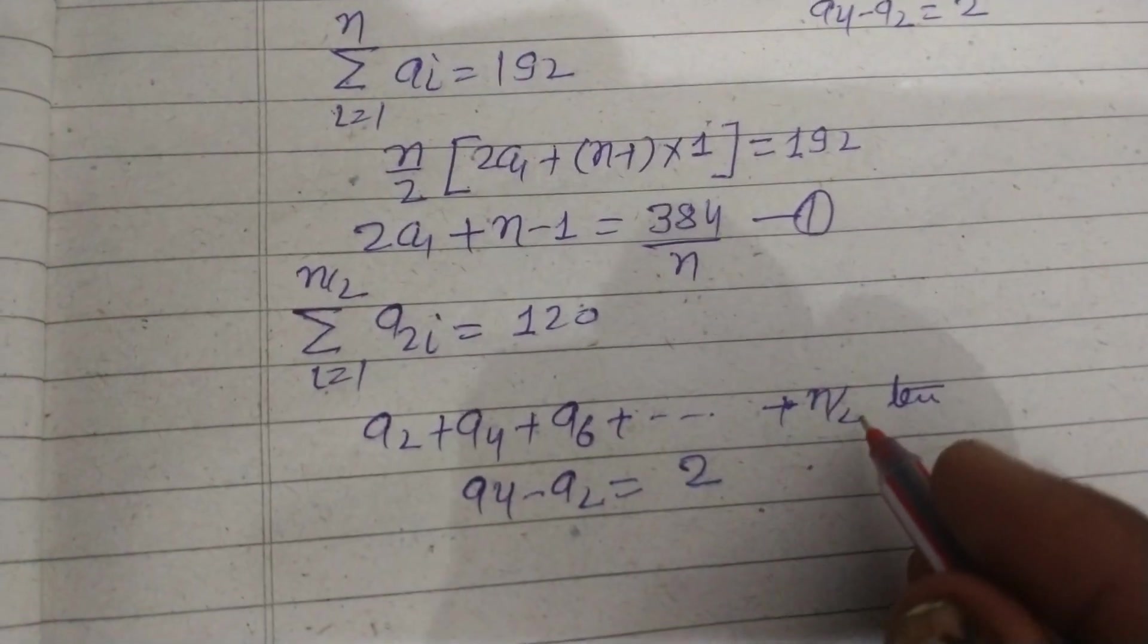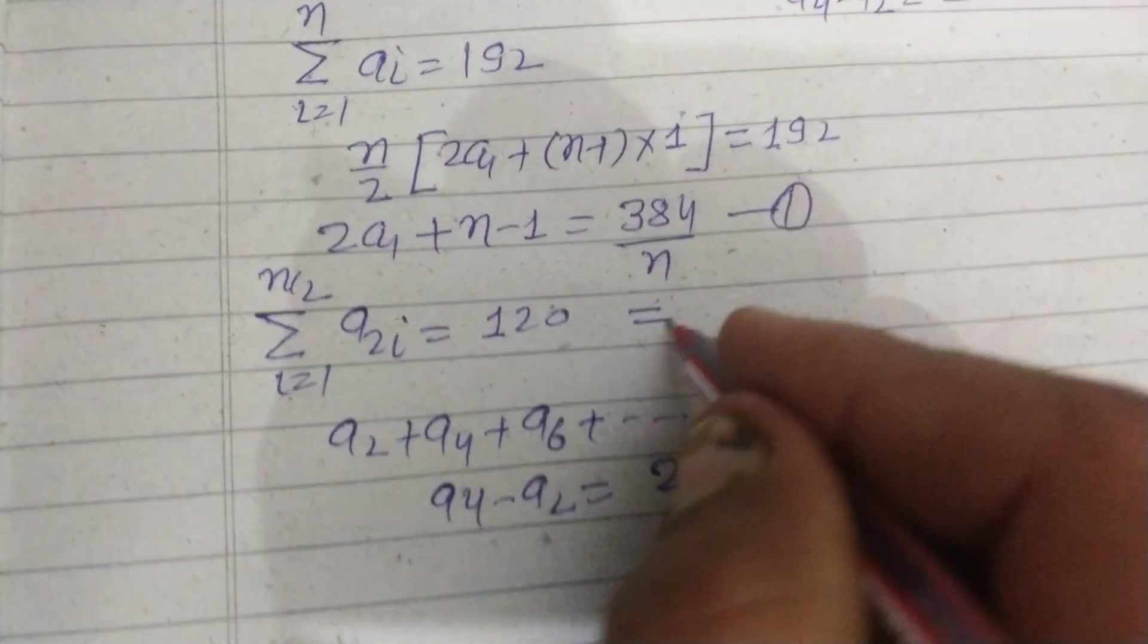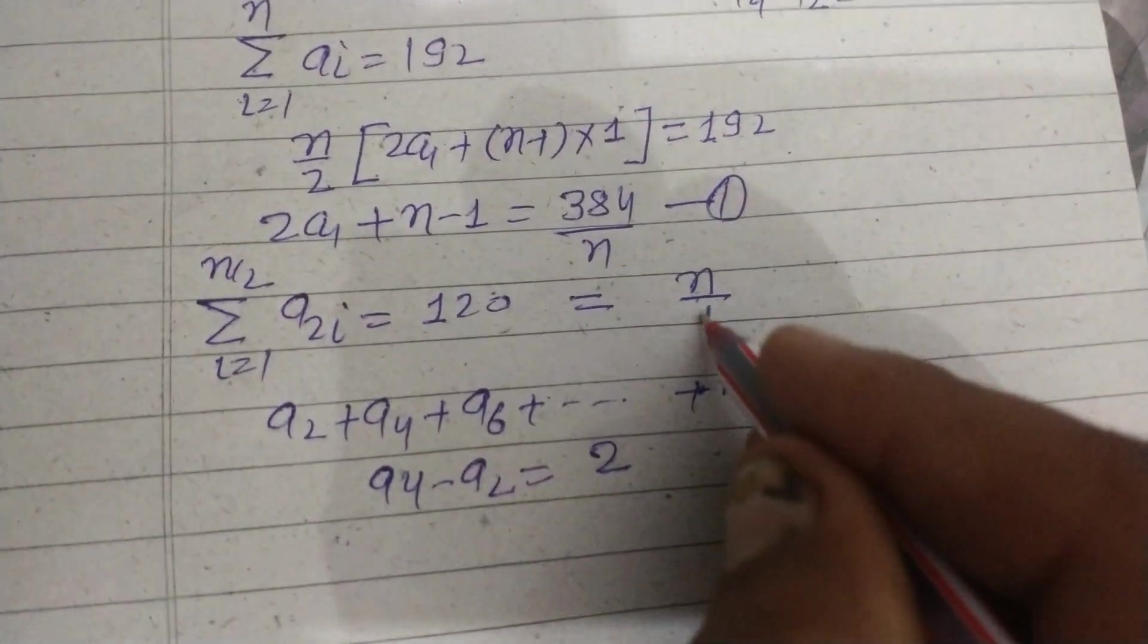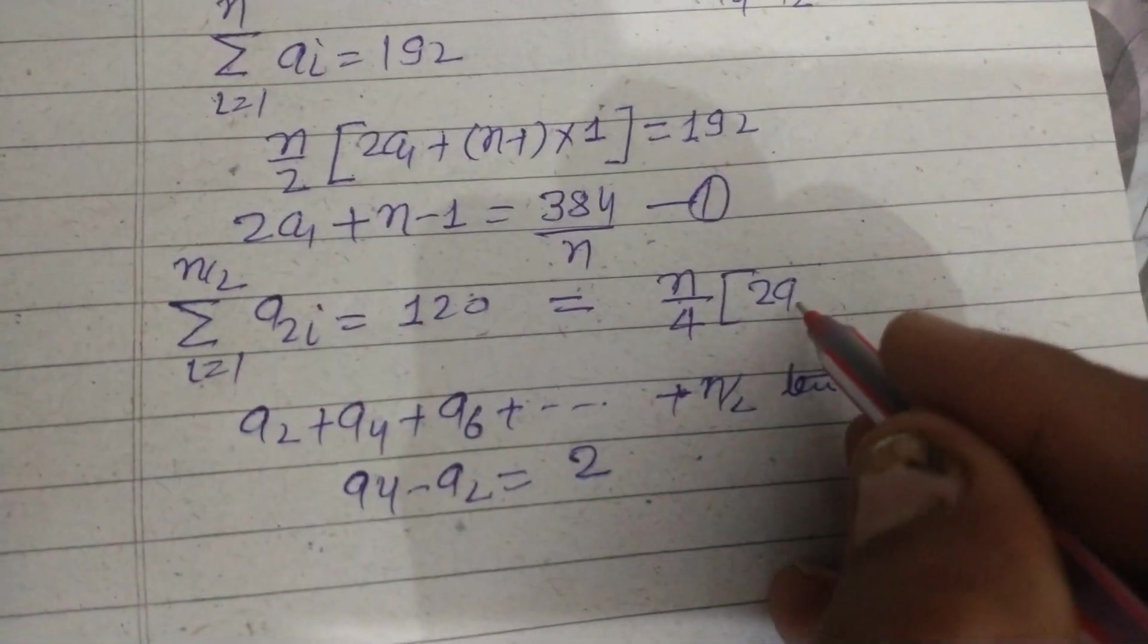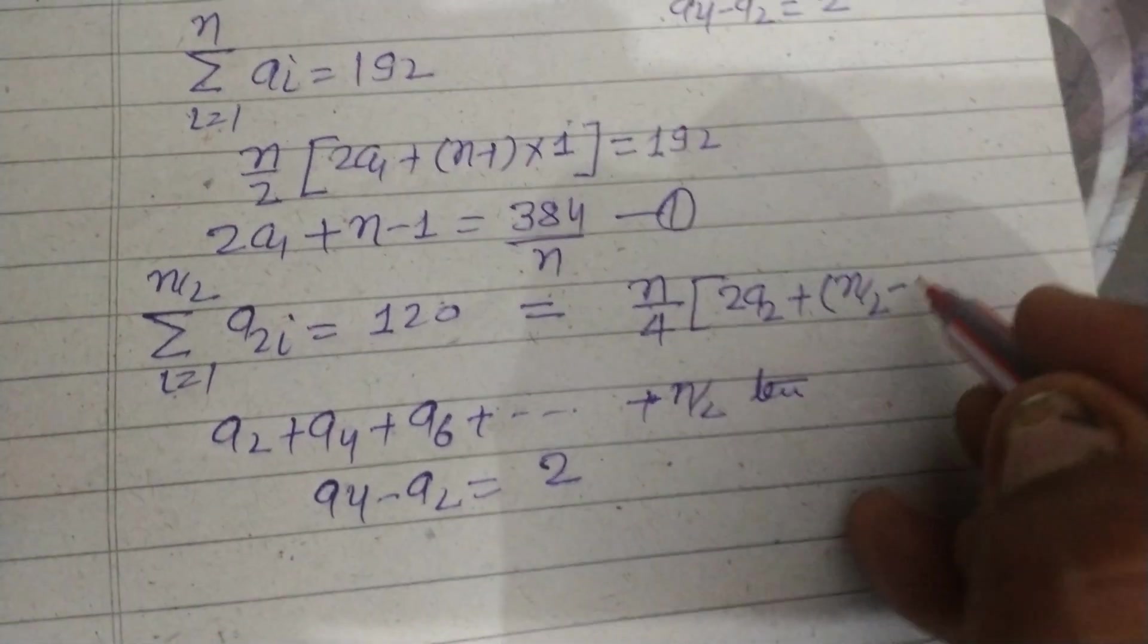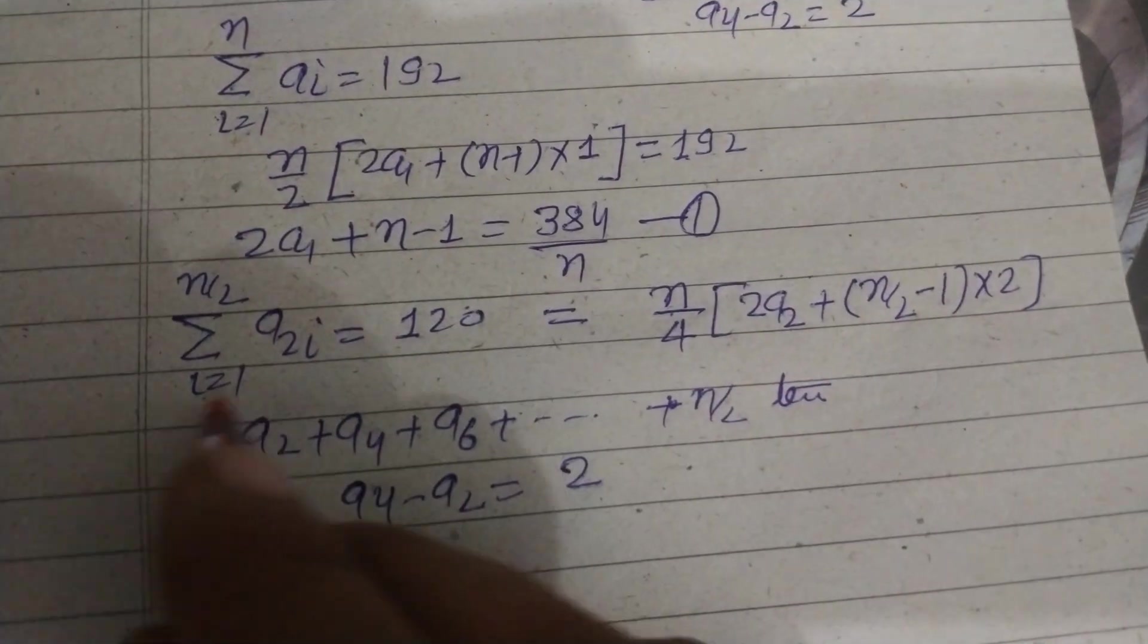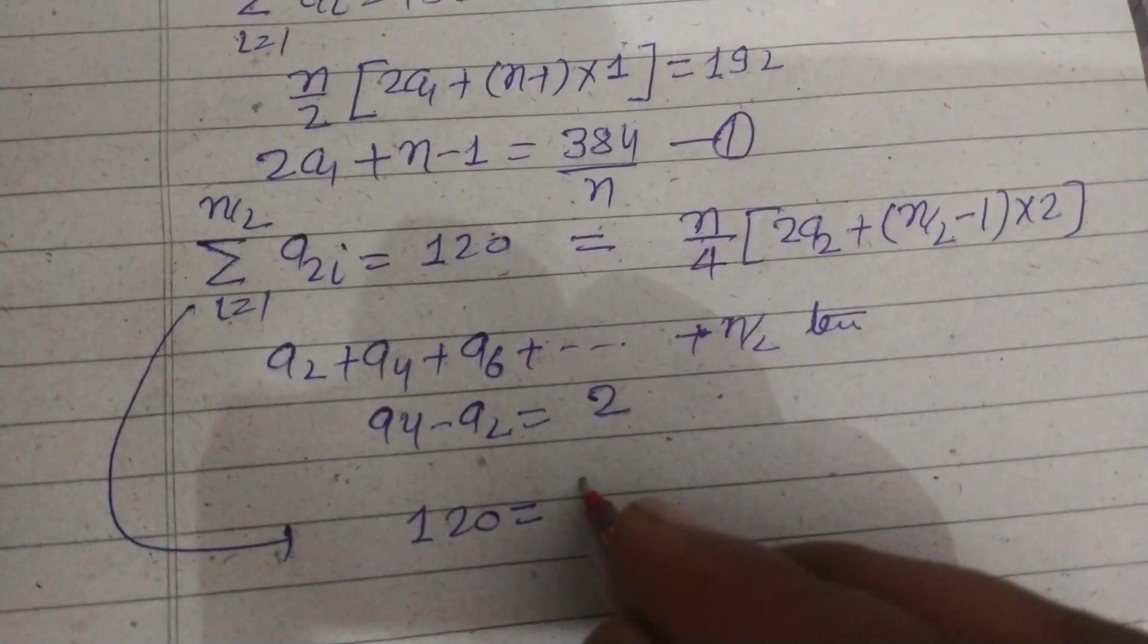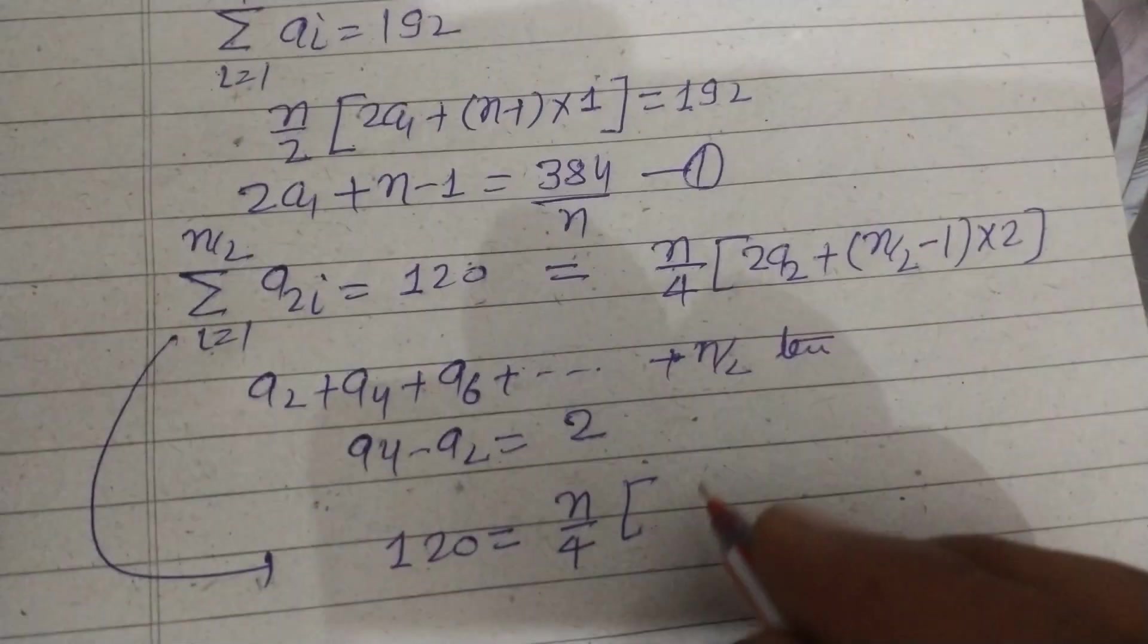The number of terms is n/2, so this will be n/2. We put n/2 in place of n, so this is n/4 times [2a2, where the first term is a2, plus (n/2 minus 1) times d which is 2].